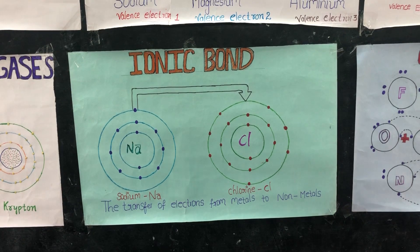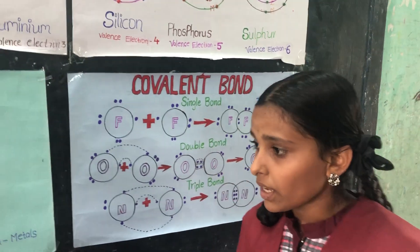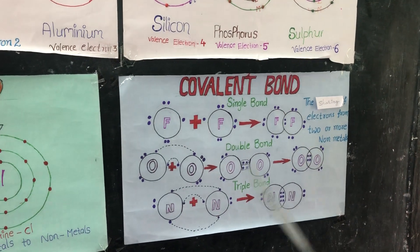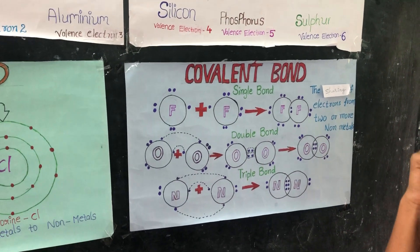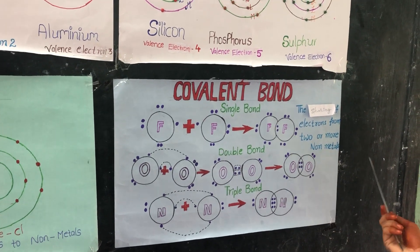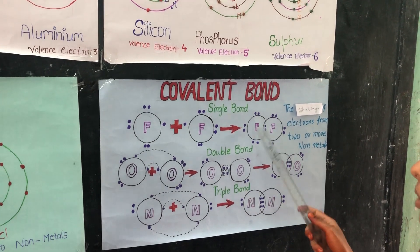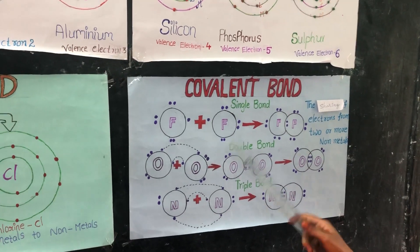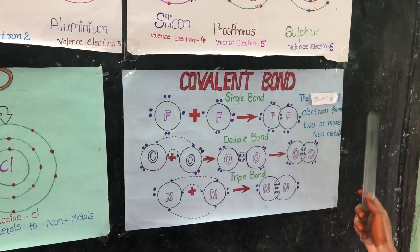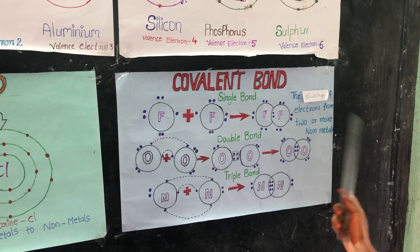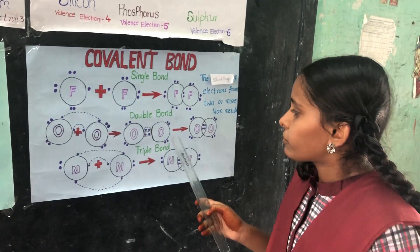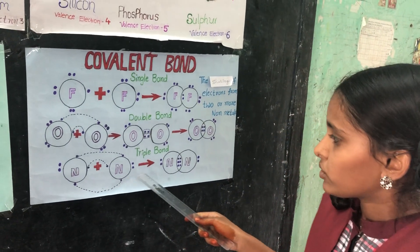And in covalent bond, Lewis proposed the covalent bond. Sharing of electrons between 2 or more atoms leads to the covalent bond. A single bond is formed between 2 fluorine atoms by mutually sharing 1 pair of electrons. A double bond is formed between 2 oxygen atoms by mutually sharing 2 pairs of electrons. A triple bond is formed between 2 nitrogen atoms.